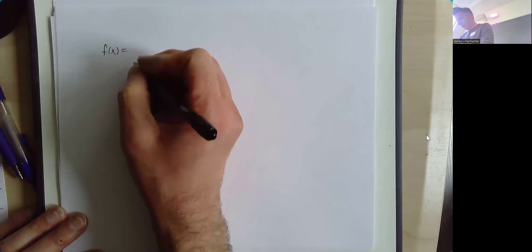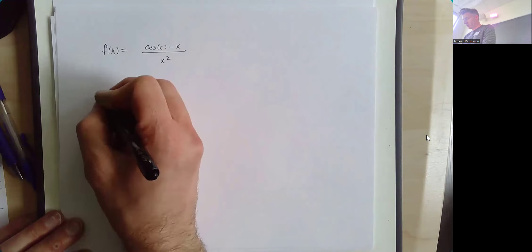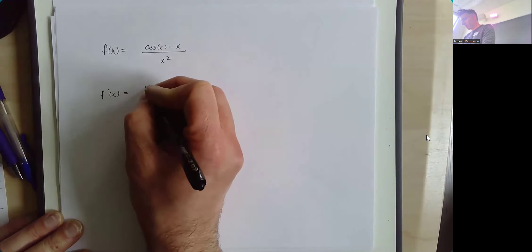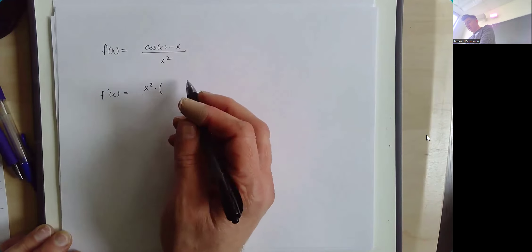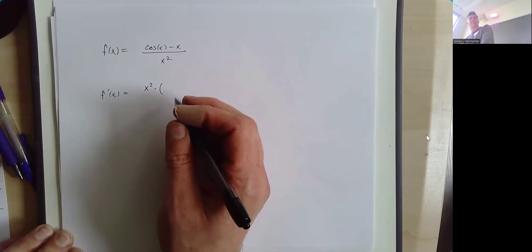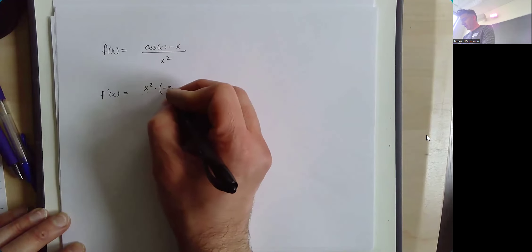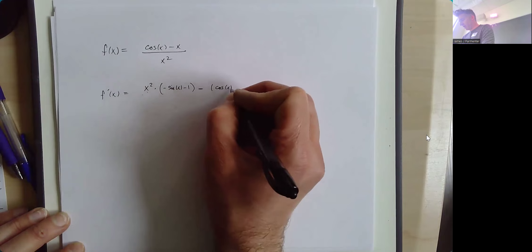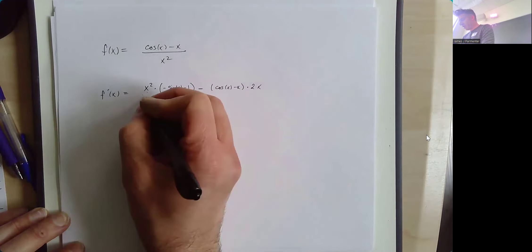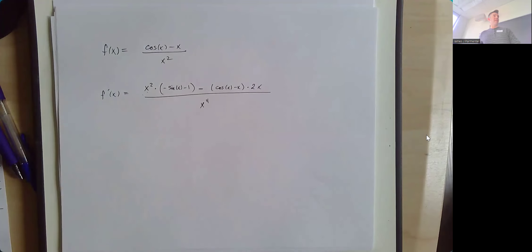So we want to find the derivative of f of x equals cosine of x minus x over x squared. The idea is that we're going to use the quotient rule: the bottom times the derivative of the top, which is negative sine of x minus one, minus the top — cosine of x minus x — times the derivative of the bottom, which is 2x, all divided by the denominator squared, which is x to the fourth. You could write x squared squared; I think it's a safe simplification to just write x to the fourth.